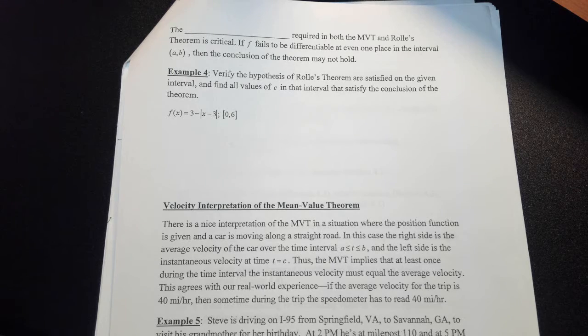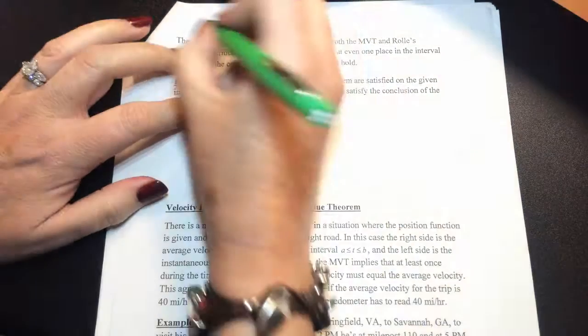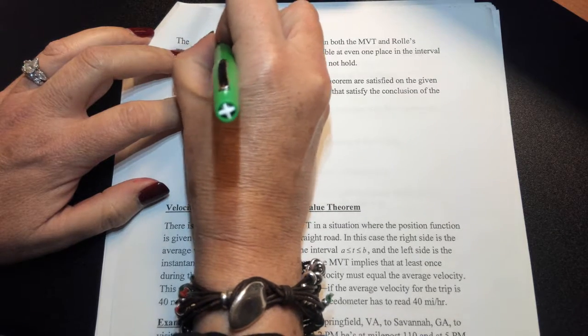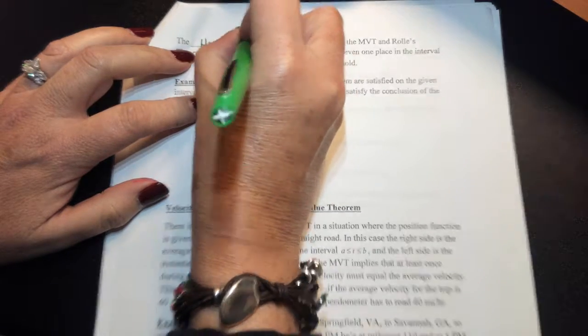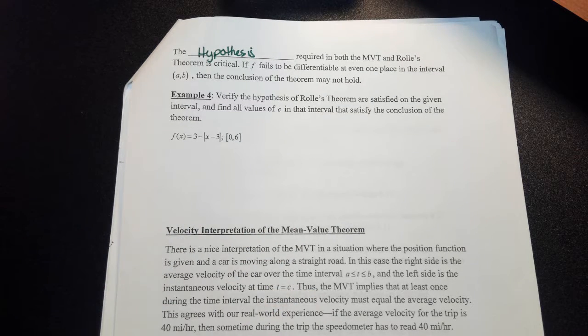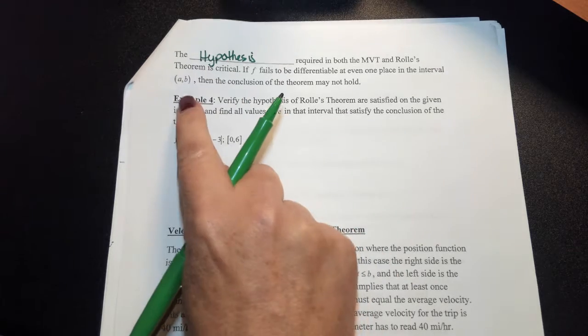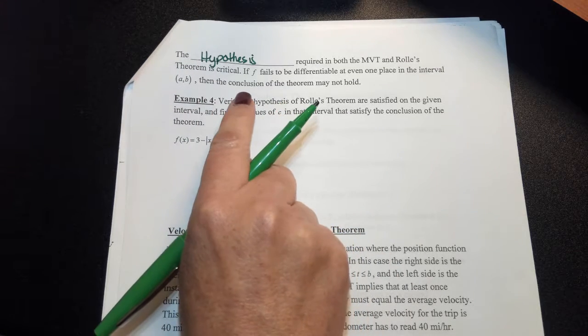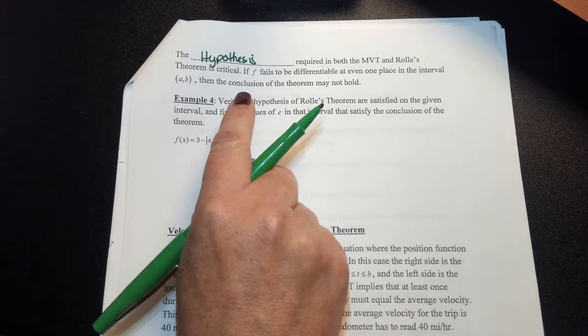of the mean value theorem or Rolle's theorem are met. In other words, make sure your hypothesis is required in both the mean value theorem and Rolle's theorem. If it fails to be differentiable, even at one place in your interval, then the conclusion of the mean value theorem does not hold.